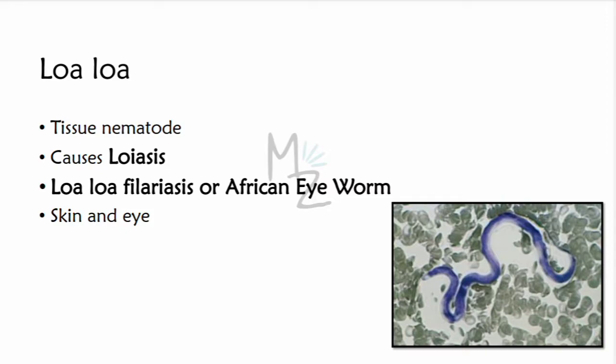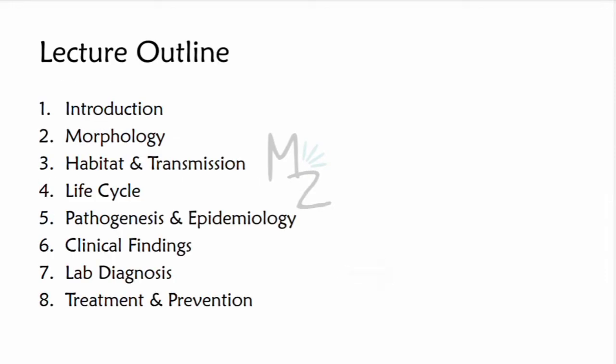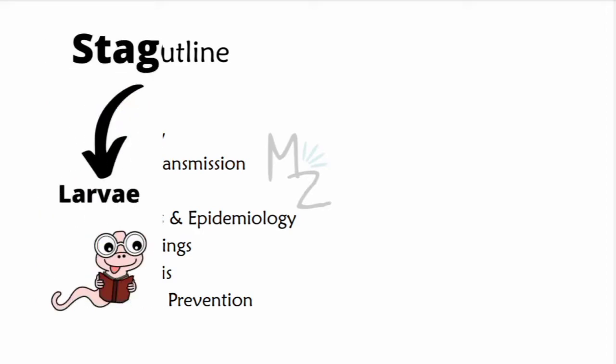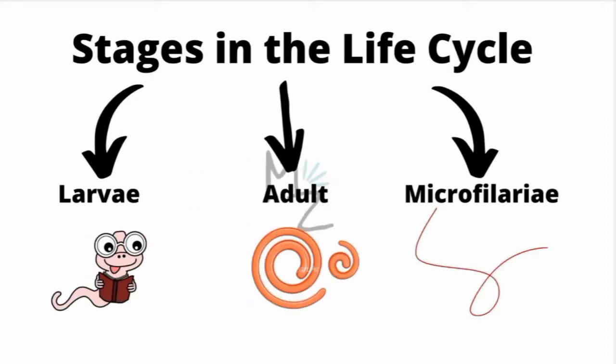Loa Loa is a tissue nematode responsible for causing Loiasis, which is also called Loa Loa filariasis or African eye worm. It is a skin and eye disease. In the lecture outline, we will talk about its morphology, habitat and transmission, life cycle, pathogenesis and epidemiology, clinical findings, lab diagnosis, treatment, and prevention. There are certain stages that exist in the life cycle of Loa Loa: the larvae, the adult, and the microfilariae.